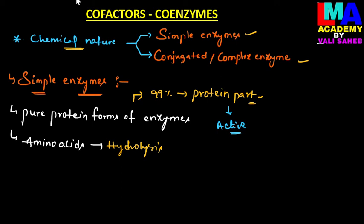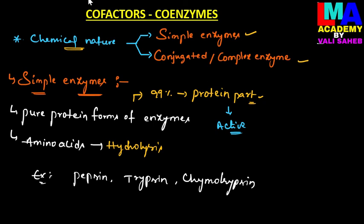Some examples of simple enzymes are pepsin, trypsin, and chymotrypsin. These are all simple enzymes which have only a protein part in their chemical structure and are considered pure protein forms of enzymes.